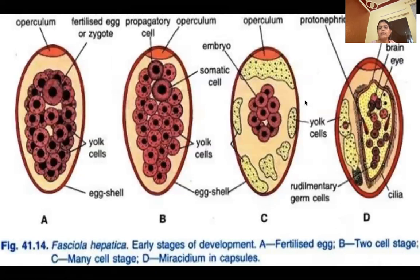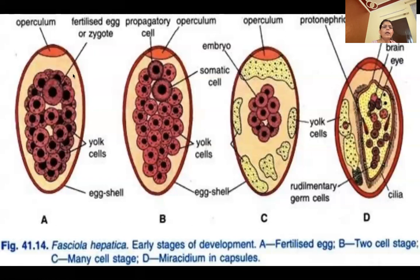Because there are so many larvae and the first larvae have germ cells made in their own larvae, this is what we call polyembryony. Let's talk about the first larva — miracidium. You can see that this egg, a fertilized egg, is a zygote. Above it there is an egg shell, yolk cells, and the operculum.